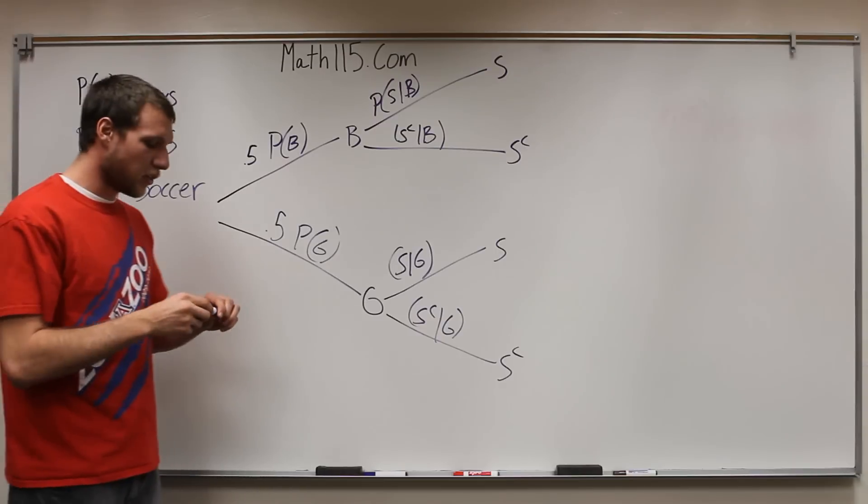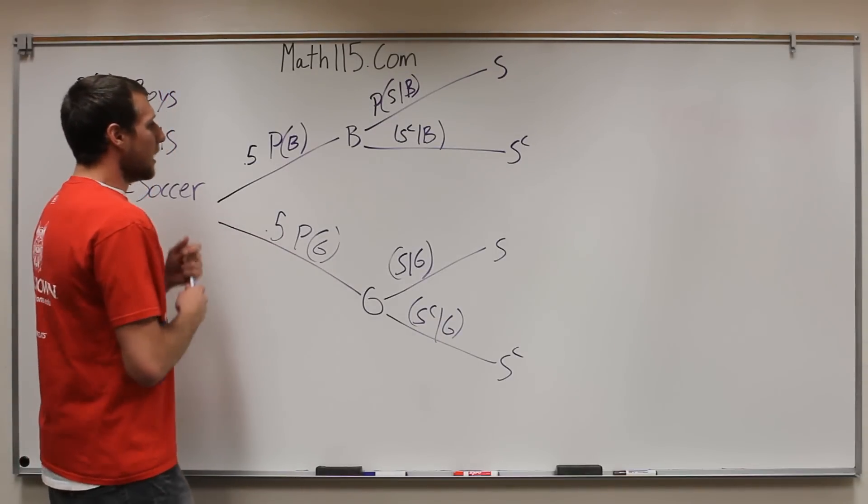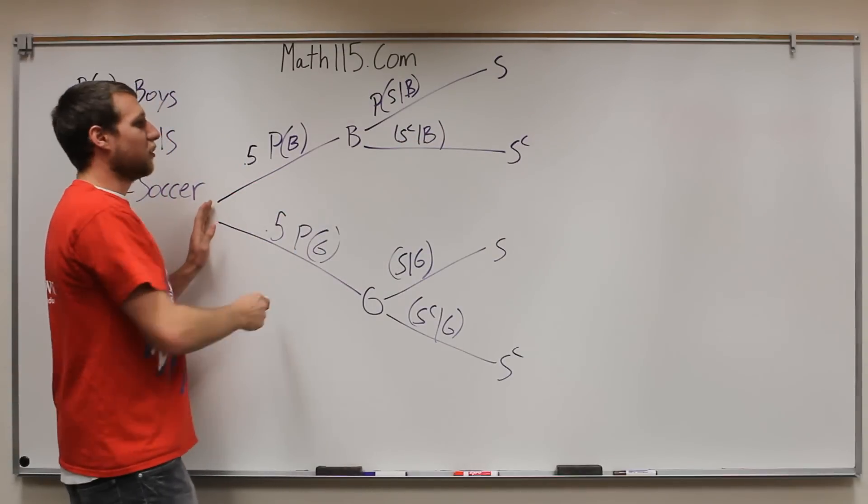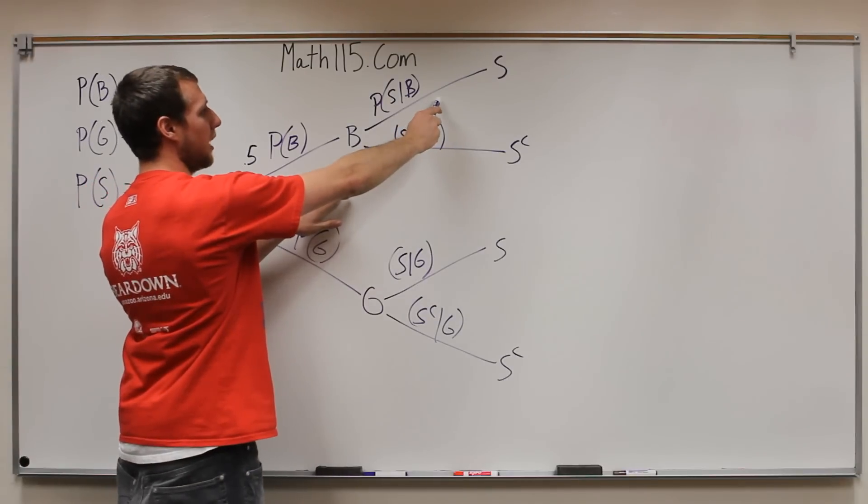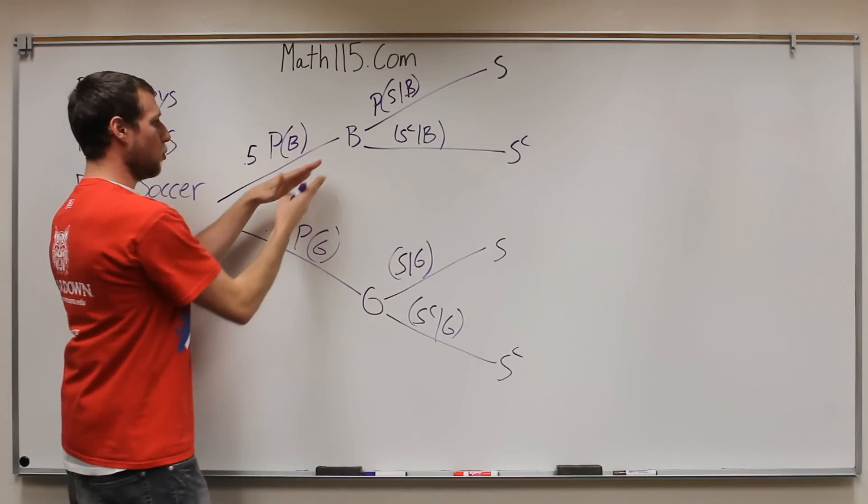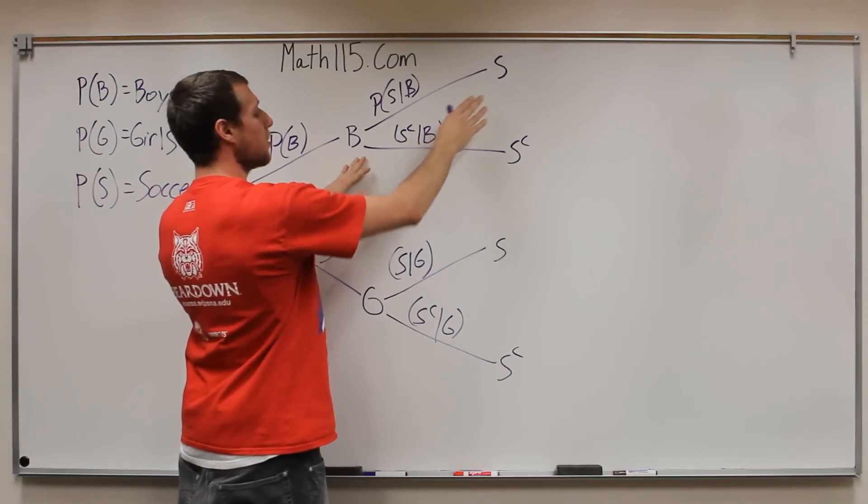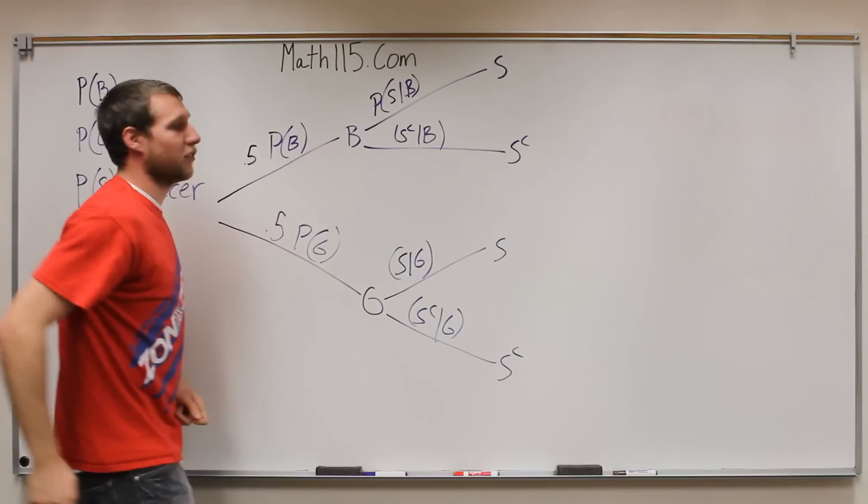So then an easier way to think about this, because it's kind of a confusing way to look at it, is when you go down these branches, the earlier events have already happened. So because we look at this branch, we already know that it has to be a boy. So you can say it is someone that plays soccer given they're a boy, because we're already branching off of that.